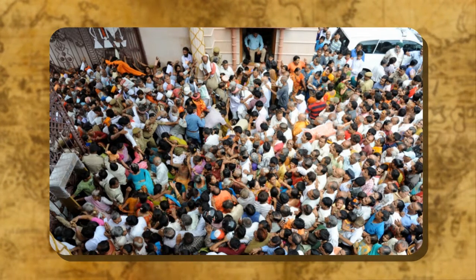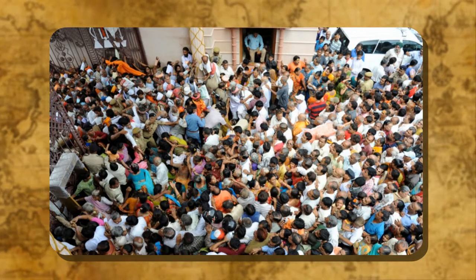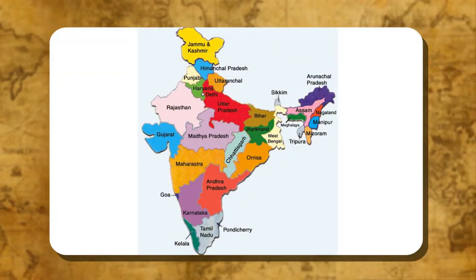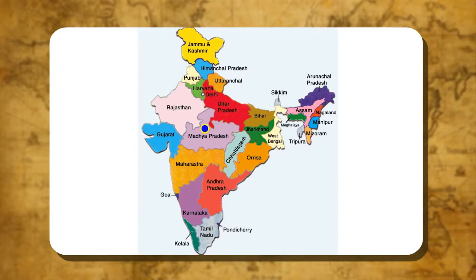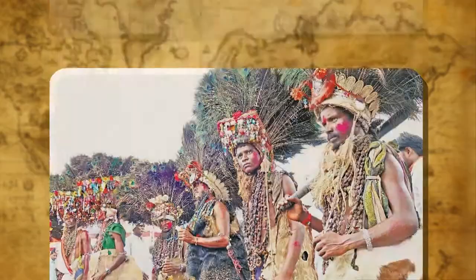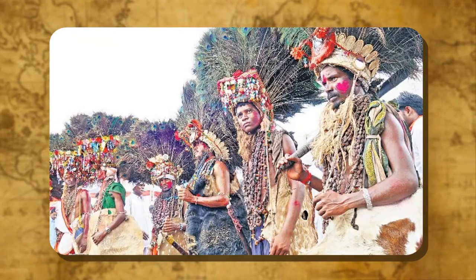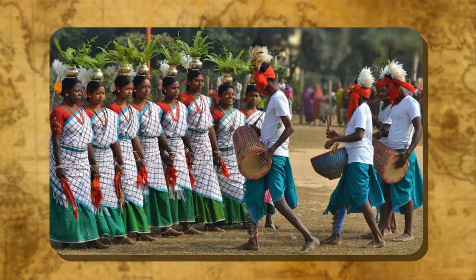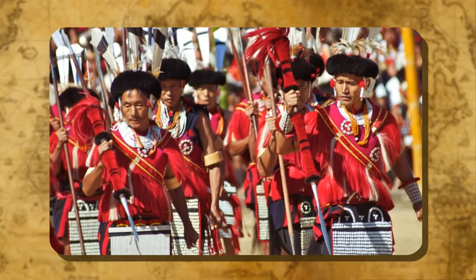Nearly one third of the tribal population of the country is concentrated in 15 districts of Jharkhand, Odisha, Chhattisgarh, Madhya Pradesh, Gujarat, Maharashtra, and Rajasthan. The largest tribal group belongs to the Gonds (7.4 million), followed by Bhils (7.3 million), Santals (4.2 million), Mesos (2.0 million), and others.